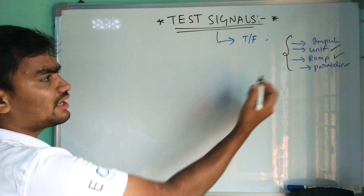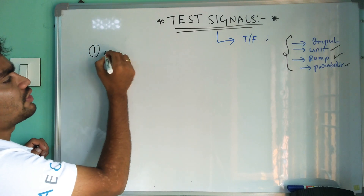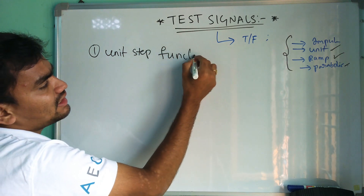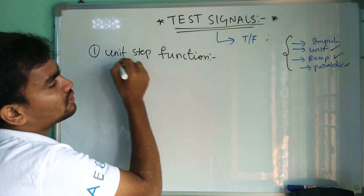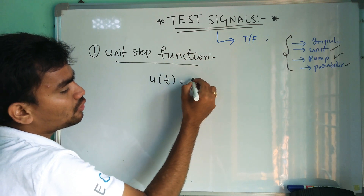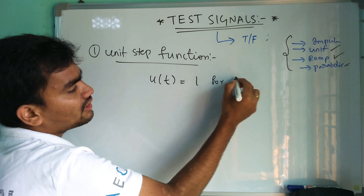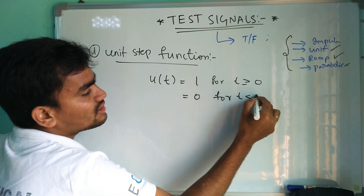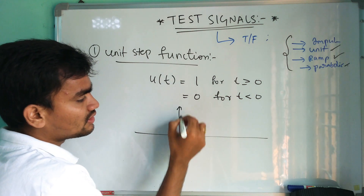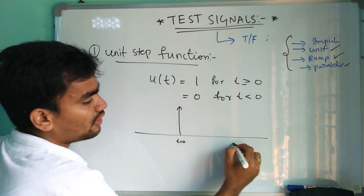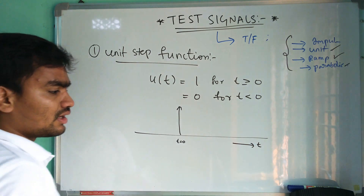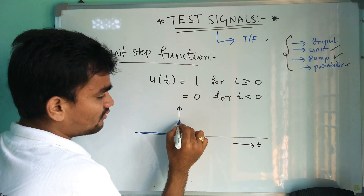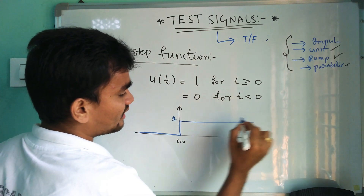In this video we are going to discuss the left-over signals, starting with the unit step function. The unit step function is defined as u(t) equal to 1 for t greater than or equal to 0, and equal to 0 for t less than 0. We can plot this graph where at t equal to 0 the function is 0 for t less than 0 and equal to 1 for t greater than or equal to 0.